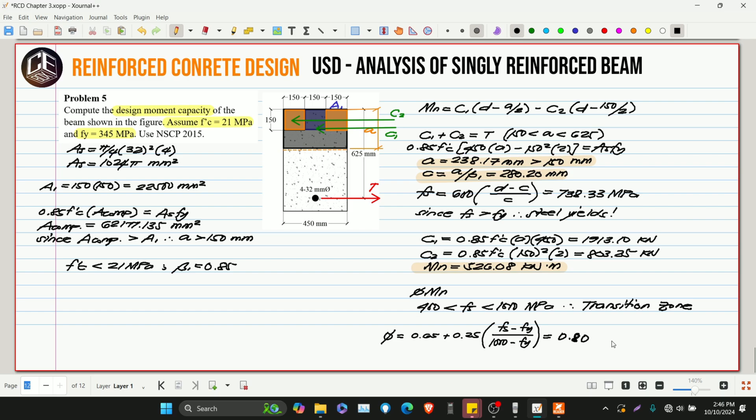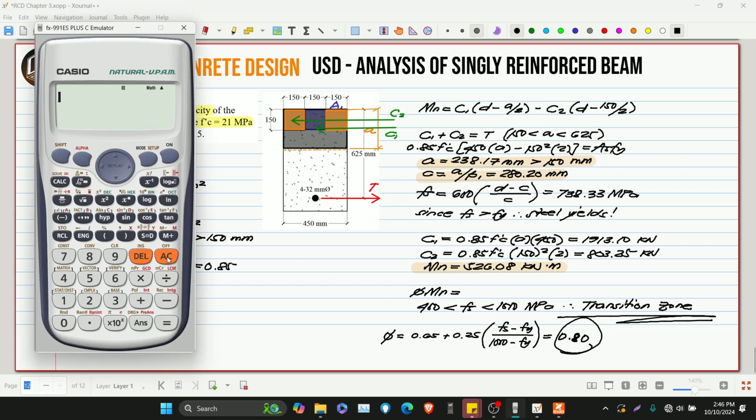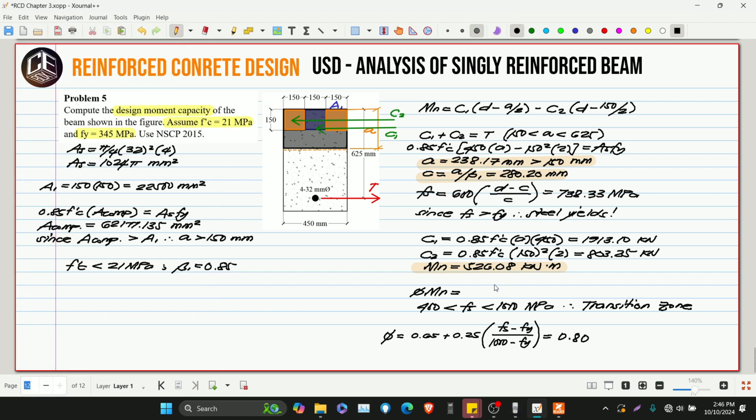See? From tension control at 90%, in the transition zone we really drop from 0.90. But, of course if we're in transition zone we should be higher than 0.65. So, since we have our reduction factor phi, we can get the design moment. So, 0.80 multiplied by 526.08. So, our design moment is 420.864 kilo newton meter.